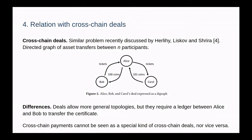Finally, we can compare our problem with the cross-chain deals problem, recently discussed by Erle, Lilskov and Shreira. Deals allow for a more general topology, because any participant can send assets to any other set of participants. However, they require Alice and Bob to be connected by a shared ledger.